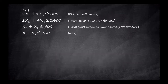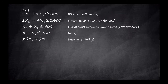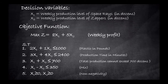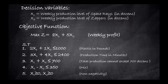We finish with the non-negativity constraints — the number of dozens produced must be greater than or equal to zero for both space rays and zappers. Now we have completed the formulation stage. The full formulation is clearly labeled and easy to read. The next step is to solve and find the optimal solution using the graphical isoprofit line approach.